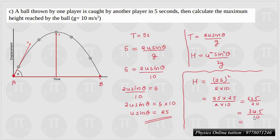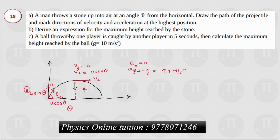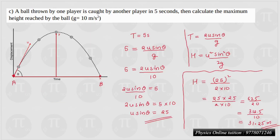So the maximum height reached by the ball is 31.25 meters. We have covered the projectile path, velocity and acceleration at the highest point, the expression for maximum height, and the time of flight equation. These are the key concepts of this problem.